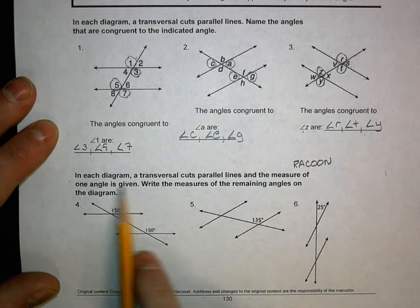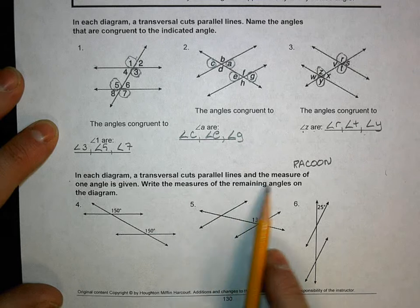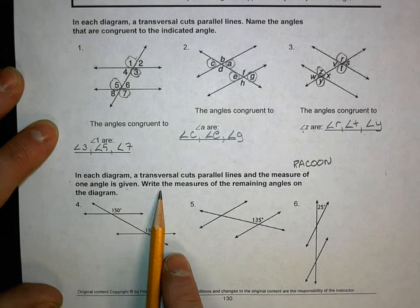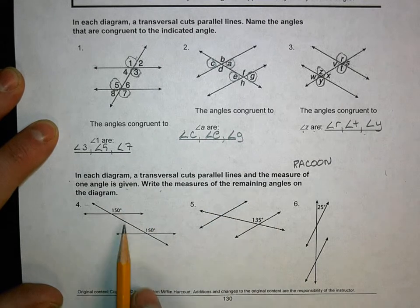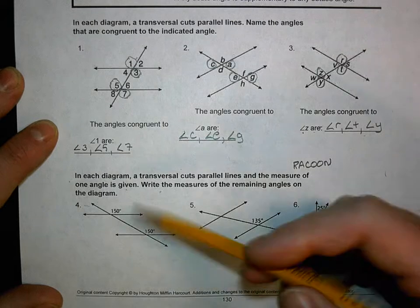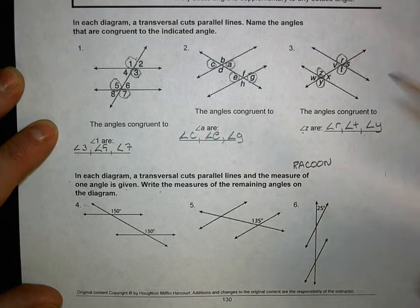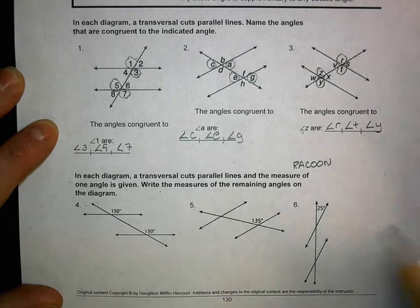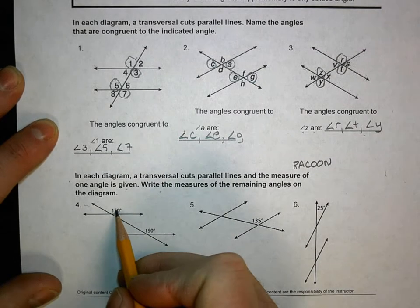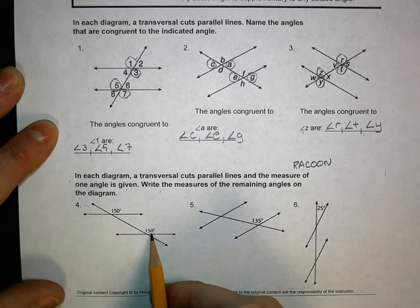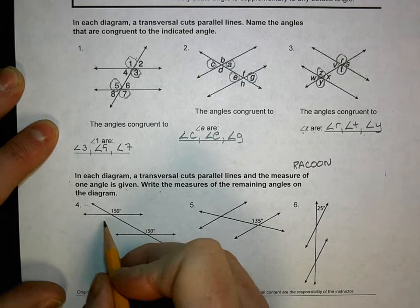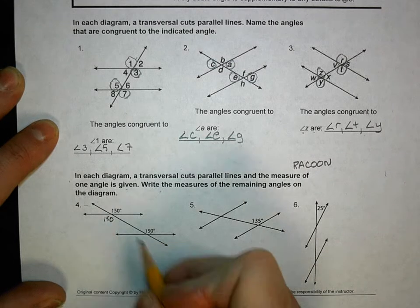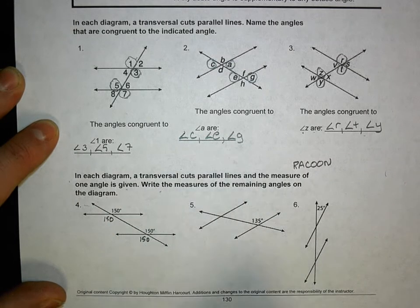So in each diagram, a transversal cuts parallel lines, and the measure of one angle is given. Write the measure of the remaining angles on the diagram. Remember, in parallel lines cut by a transversal, there are only two angle measurements involved. So if they give you one, they've actually given you all. So I'm going to take this, and I got 150, and they've labeled the corresponding angle. Remember that the opposites of those are also the same measurement. Now I've got four angles done.